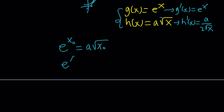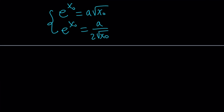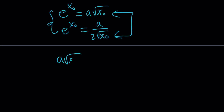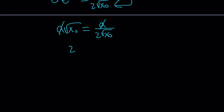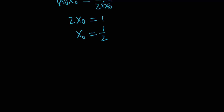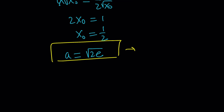Since the left-hand sides of both equations are the same, we can set the right-hand sides equal to each other. The a's cancel (since a ≠ 0 — if a = 0 you get the x-axis, which is not a solution). This gives 2x₀ = 1, so x₀ = 1/2. Substituting back gives a = √(2e). Therefore, the equation has exactly one solution when a = √(2e).